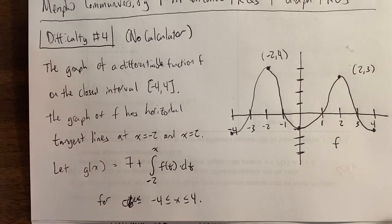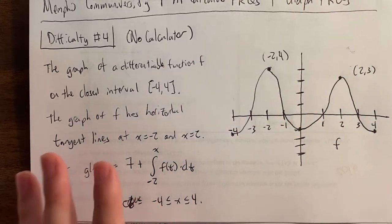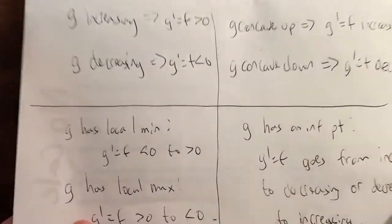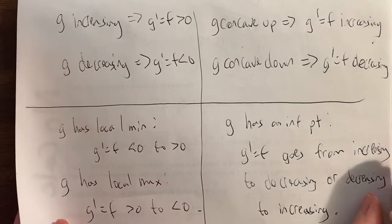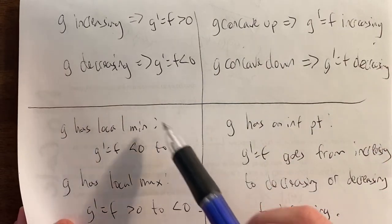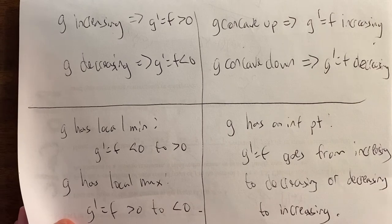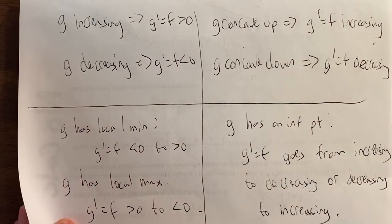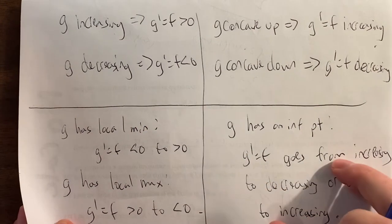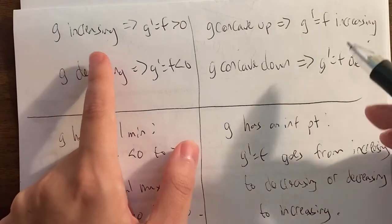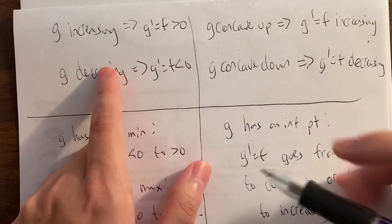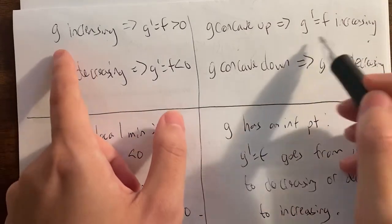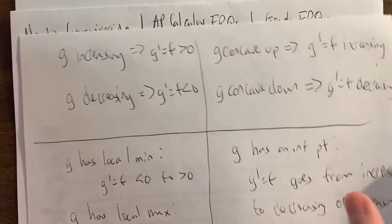This was going to be similar to our difficulty number 2 video, just a wackier variant. We'll use shapes of curves rules: g increasing, g decreasing, g concave up or down, g local min or max, g inflection point — where in every single one of these, our justification is g prime equals f does something. The most confusing thing is that the word 'increasing' appears twice, but g is increasing because g prime equals f is positive, while g is concave up because g prime equals f is increasing — different rules.